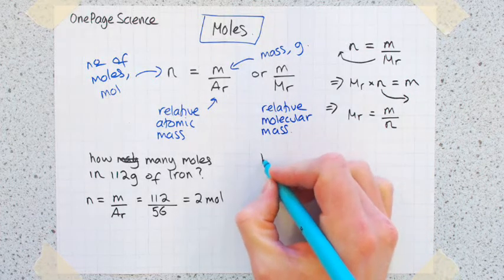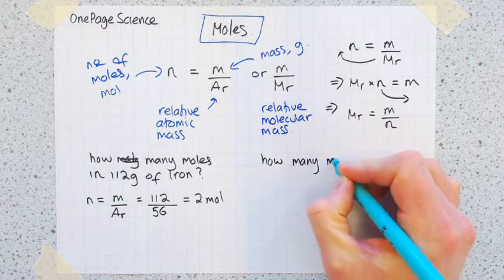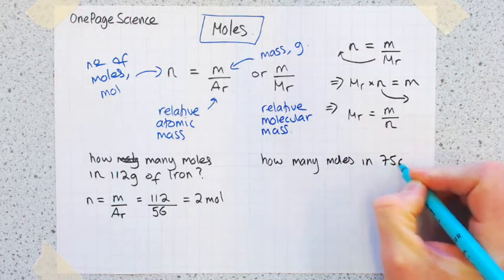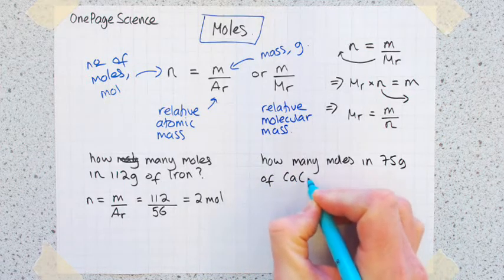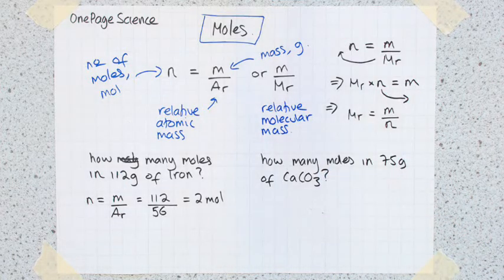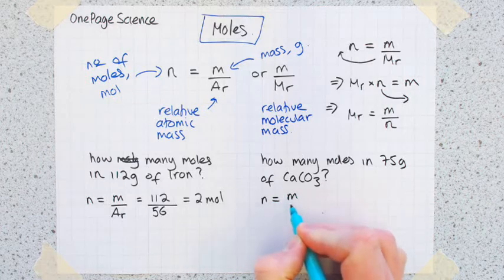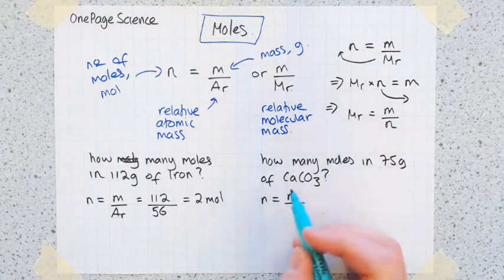That's one as an example if you've got an element. Sometimes you might be asked about it if you've got a compound. So let's try another one. How many moles in 75 grams of calcium carbonate, our trusty friend from the limestone topic? Same equation: number of moles equals mass, but this time instead of divided by Ar we're going to divide it by Mr because it's a compound.